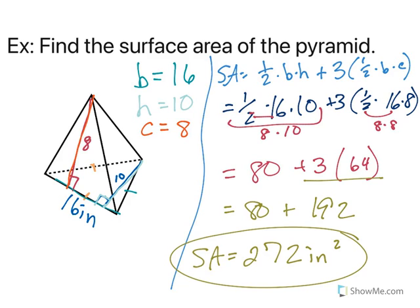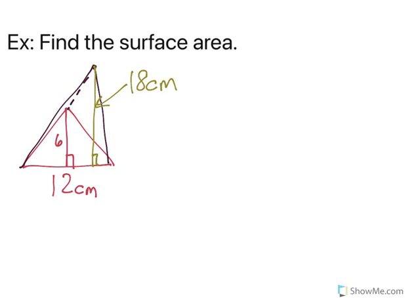All right, let's do one more. We have ourselves an equilateral triangular pyramid, and we want to find the surface area. So again, label what you know. So I know it looks like the base is 12 centimeters, the height of my base is 6, and then C, which goes from the apex to the side, to a base, is 18.